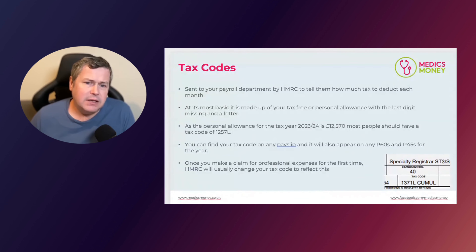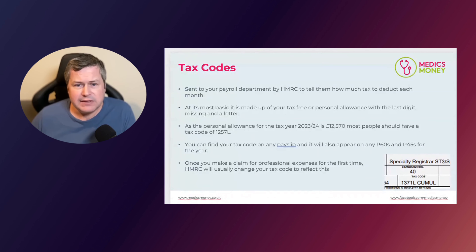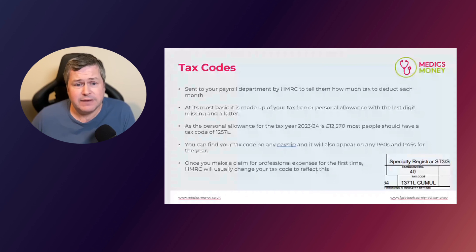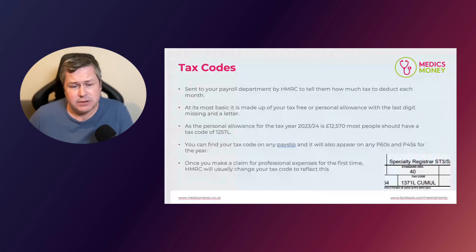So why might you have a different tax code to 1257L, or S1257L or C1257L if you live in Scotland or Wales respectively? The pay-as-you-earn system is not an exact science, and under- and overpayments of tax are common. HMRC uses your tax code to tax you extra if they believe you've underpaid, or give you money back if they believe they owe you. If they think there are reasons you owe them tax, they can alter your tax code to claw that money back.